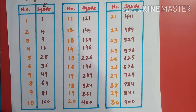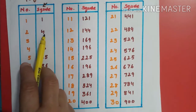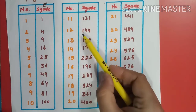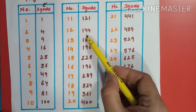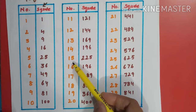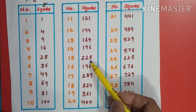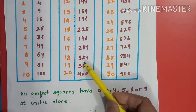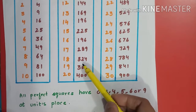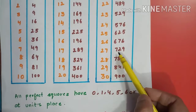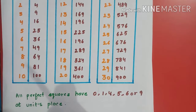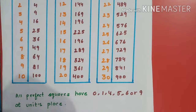We can observe one more property from this list: the square of an even number is even, and the square of an odd number is odd. For example, 12 is even and 12 square is 144, which is even. 15 is odd and 15 square is 225, which is odd. Similarly, 18 square is 324 — even — and 27 square is 729 — odd.